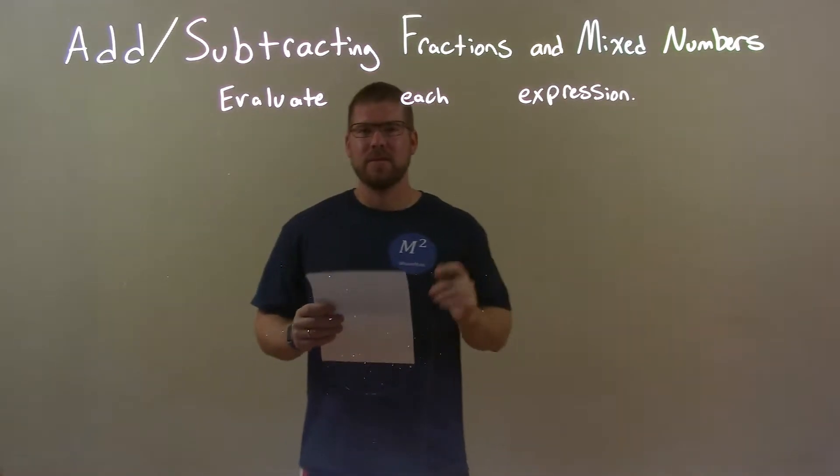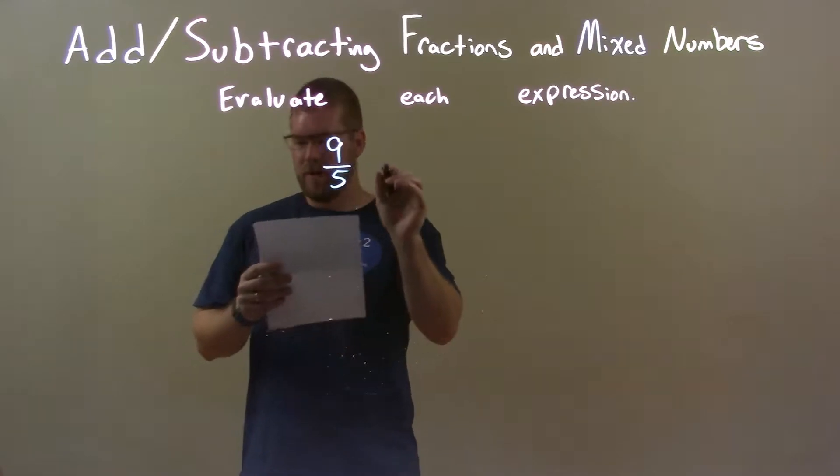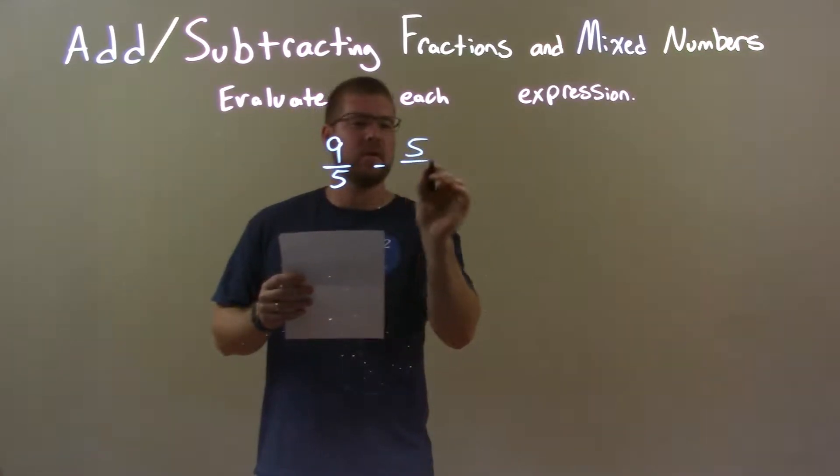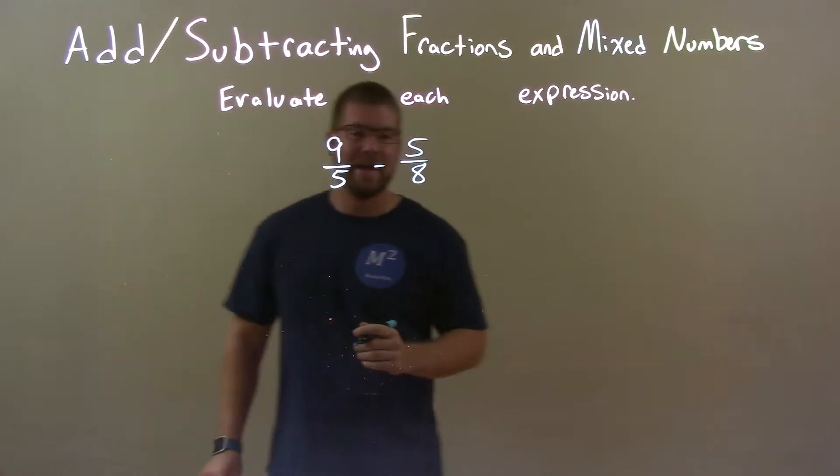So if I was given these fractions, 9 over 5 minus 5 over 8. So 9 fifths minus 5 eighths.